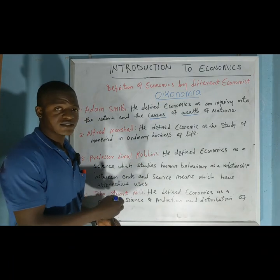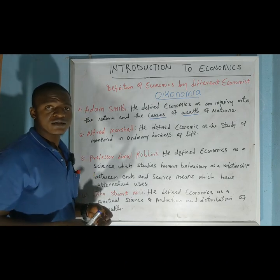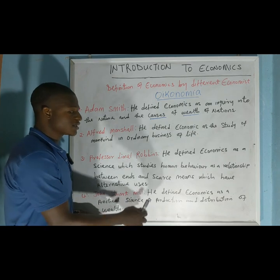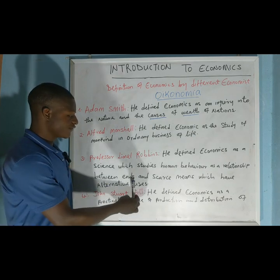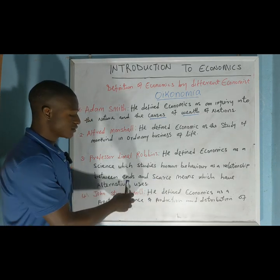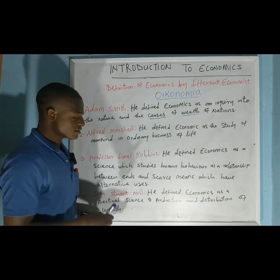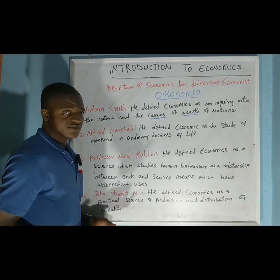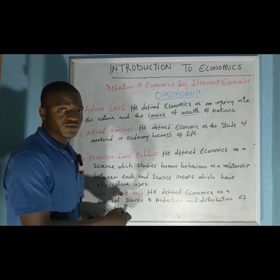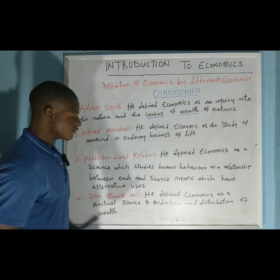Professor Lionel Robbins defined economics as a science which studies human behavior as a relationship between ends and scarce means which have alternative uses. He tried to look at the human activities that man undertakes to satisfy his unlimited wants with his limited resources. From his definition, human resources are limited while wants are unlimited, and these resources have alternative uses — if resources are used in the production of one good, they will not be available for another use.